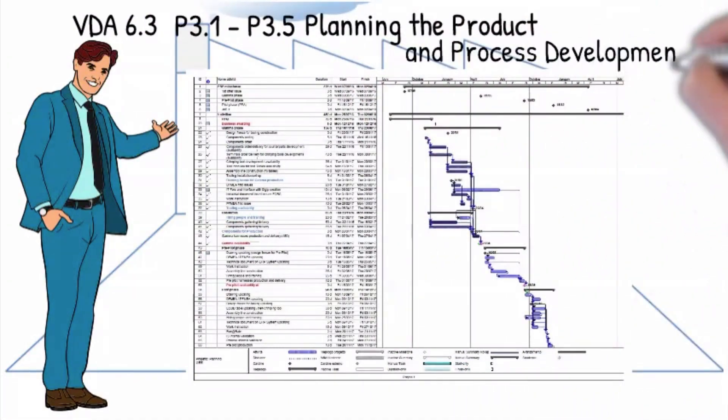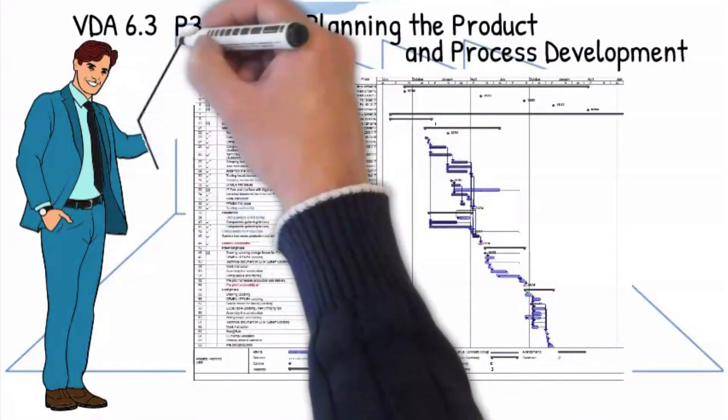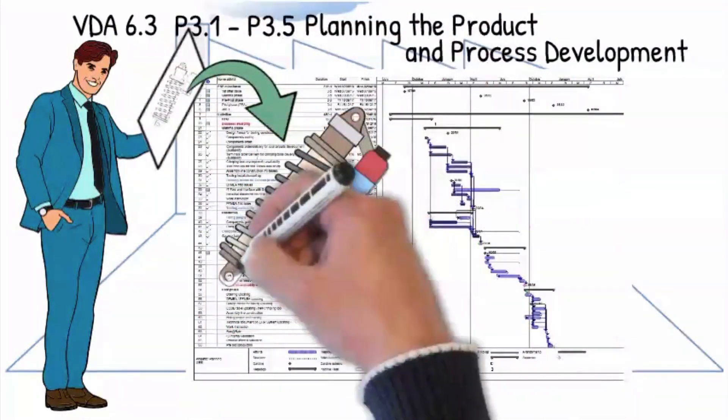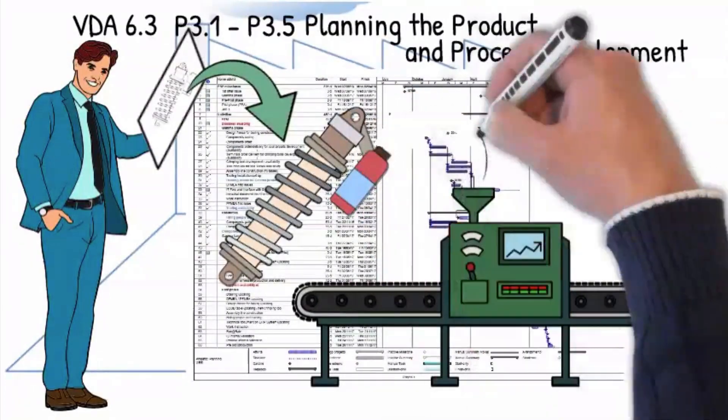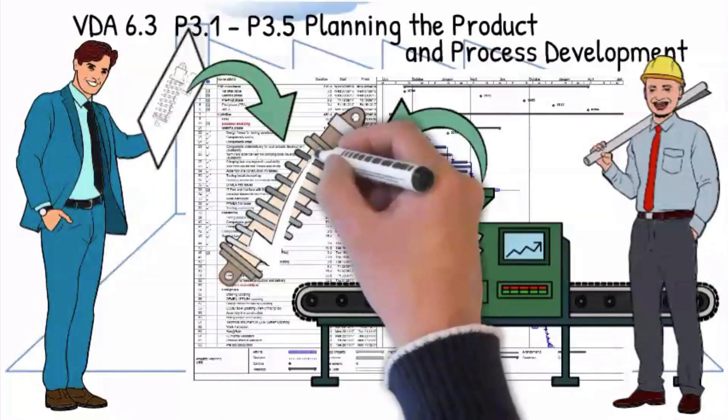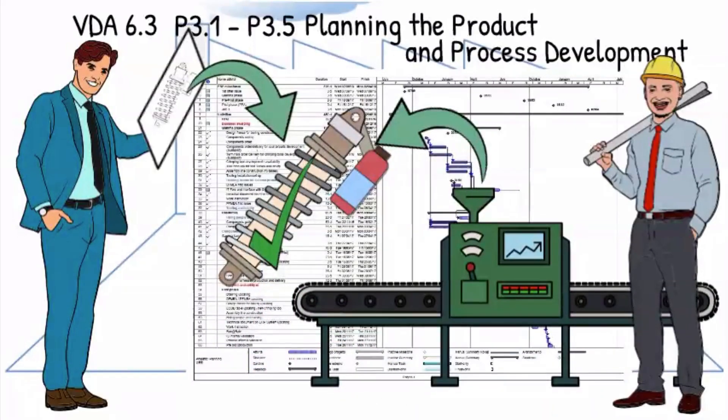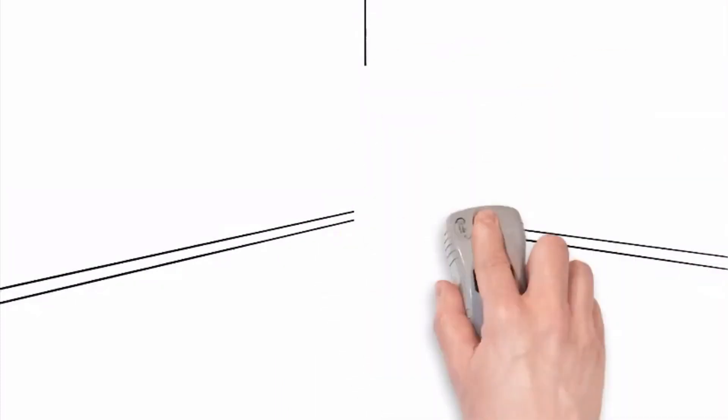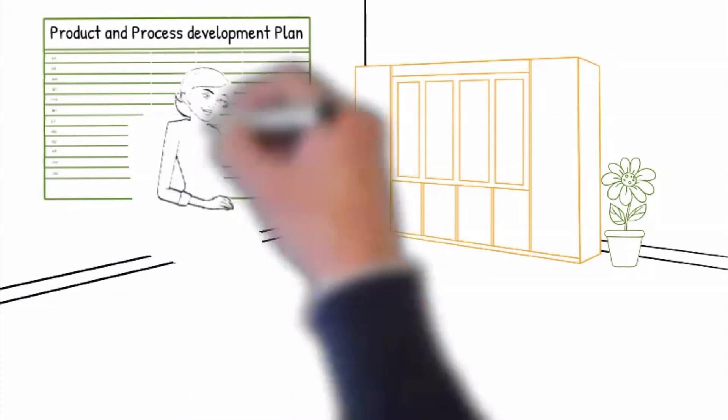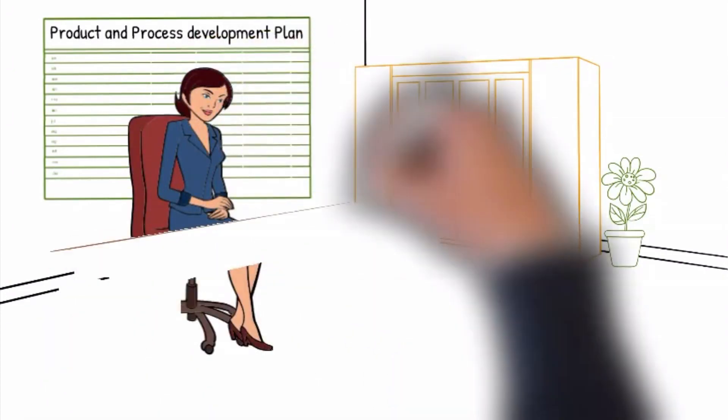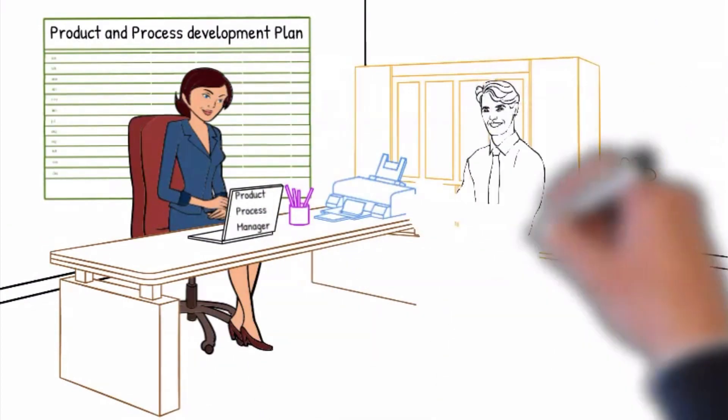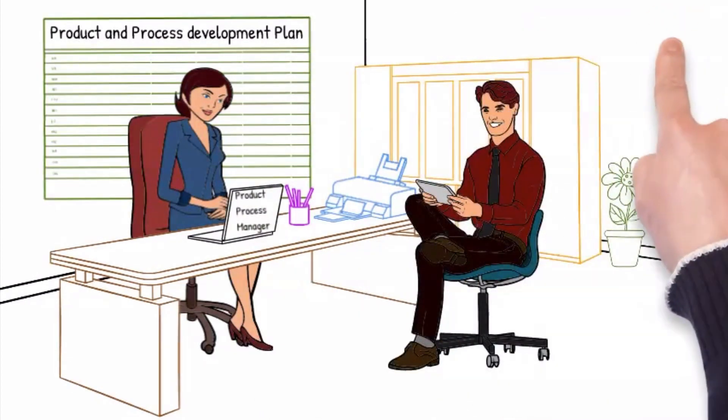P3, planning the product and process development, to evaluate the planning steps how the product is designed and developed to meet the customer requirements, and the process development activities to ensure that the product can be manufactured consistently to meet the customer quality and delivery requirements. We will now audit the product and process development manager to assess if the product and process activities will be planned and implemented according to the project plan to ensure that the processes will be capable and implemented in time according to the customer's requirements.